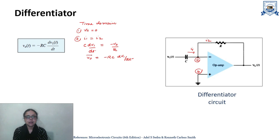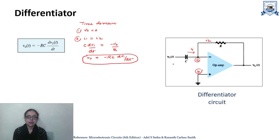It means the output voltage is the differentiation of the input voltage — whatever input we have applied, we will get the differentiated waveform. For example, if we apply a triangular waveform, the output will be a square wave. It will be just the reverse of the integrator.